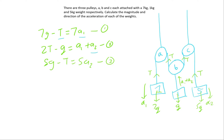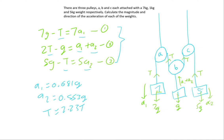We have three equations, so by simultaneously solving these equations with our calculator, we will get the value of each. A1 is equivalent to 0.681g, A2 is equivalent to 0.553g, and the tension is equivalent to 2.23g. A1 would be moving downwards, and because it is positive, the 7kg pulley will indeed be moving downwards at 0.681g.